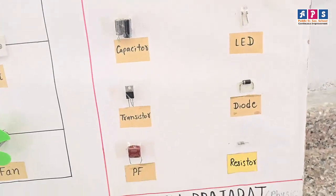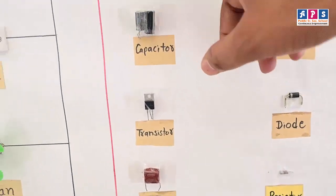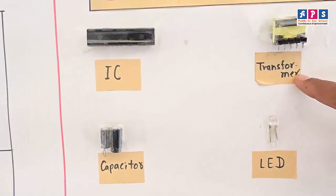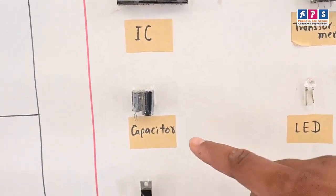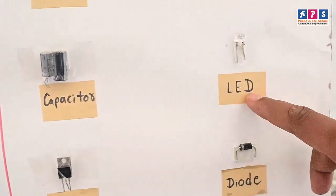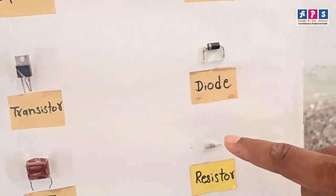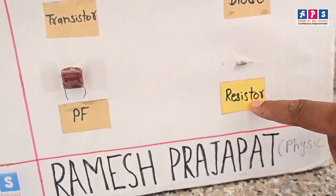This is the IC. This is the transformer. This is the actual shape of the capacitor, LED, transistor, diode, and the resistor.